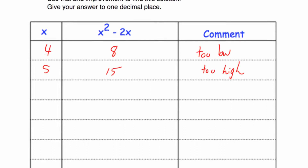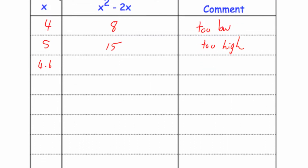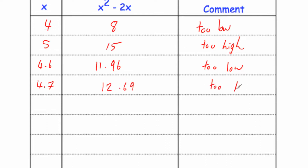We want our answer to one decimal place. Let's try 4.6: 4.6 squared minus 2 times 4.6 equals 11.96. We want 12, so that's too low. Now let's try 4.7: that gives 12.69, which is too high. So the answer is in between 4.6 and 4.7. Let's try the checker — the midpoint 4.65: 4.65 squared minus 2 times 4.65 equals 12.3225, which is too high.